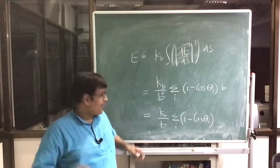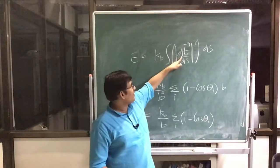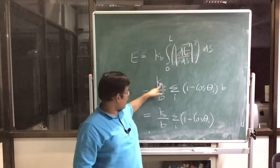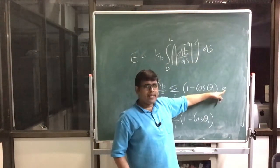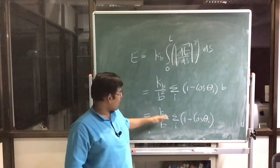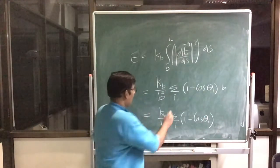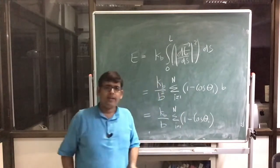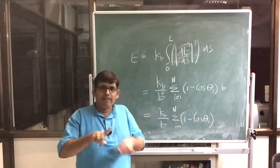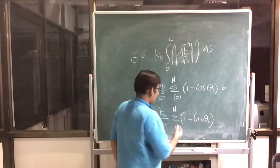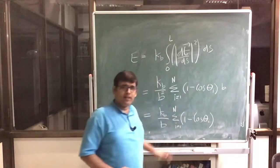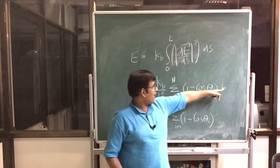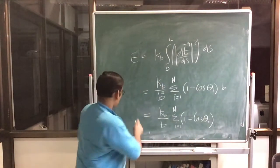Just to clarify: the energy is (k_b/2) times the integral from 0 to L of |dt/ds|² ds. When converting to discrete form, there is a k_b/b² factor, but then there is a ds which contributes b, so those b's partially cancel and you get k_b/b times the sum over i of (1 − cos θ_i). If there are n vectors, there would be n−1 angles. This confirms the formula is correct.